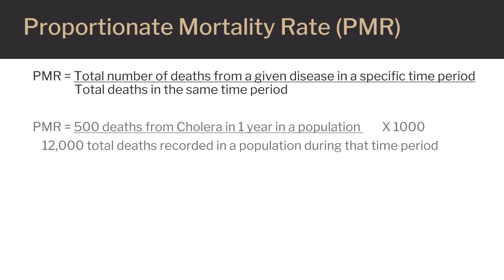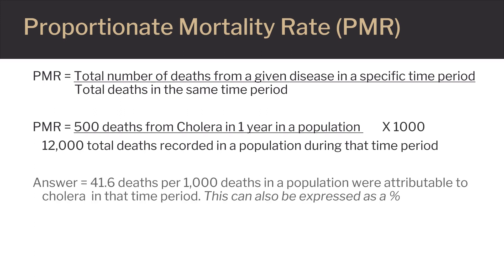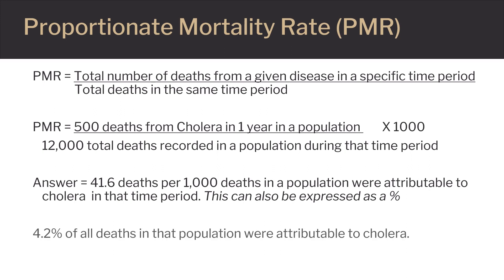This slide details how to calculate a proportionate mortality rate, or PMR. PMRs can either be expressed as a number of deaths from a specific disease out of all known and recorded deaths during a given time period, or as that specific disease representing x percentage of known deaths out of all deaths in a population within a specific period of time. See examples on this slide.